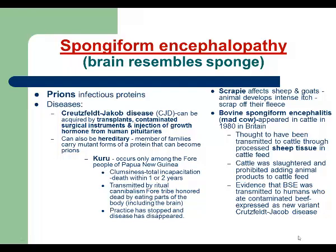We continue with infections caused by prions. Prions are infectious proteins — they are not viruses because they lack the structure of viruses. Despite their simple structure, they can cause very serious problems in humans. They cause what we call spongiform encephalopathy, which is a deadly form of encephalitis. The brain of affected patients becomes so damaged it looks like a sponge.